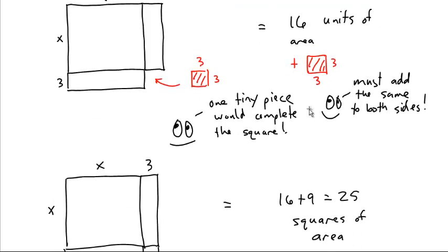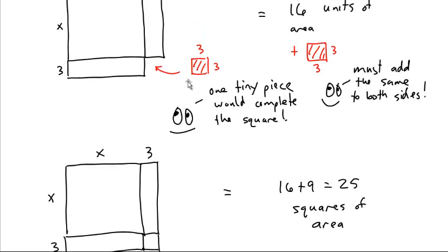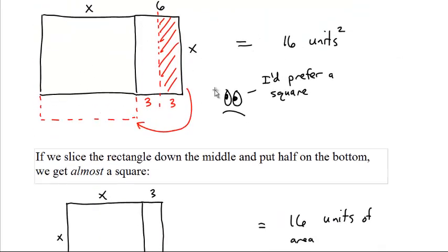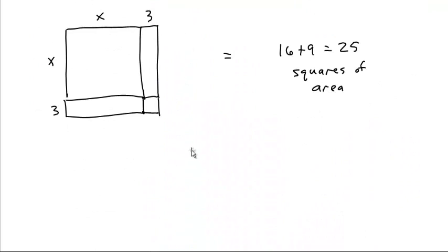And notice that we're going to say it's x plus three, three being the half of the six. This is going to come into play later, half of the six. So now they have a square. X plus three by x plus three is 25. We could call that x plus three squared is 25.